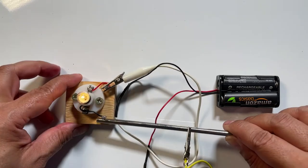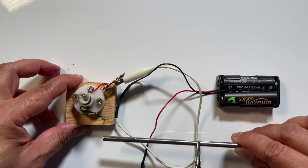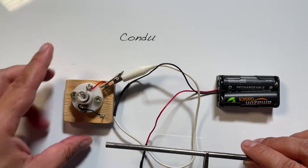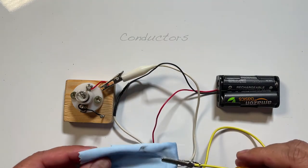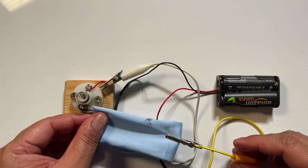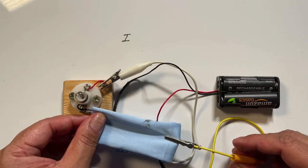Materials that allow electrons to flow freely are called conductors, and materials in which electrons cannot flow freely are called insulators.